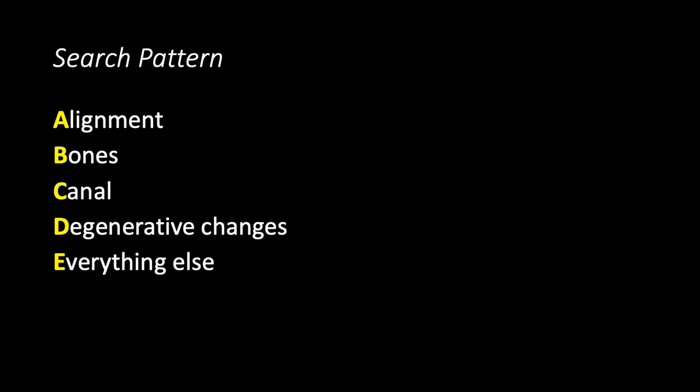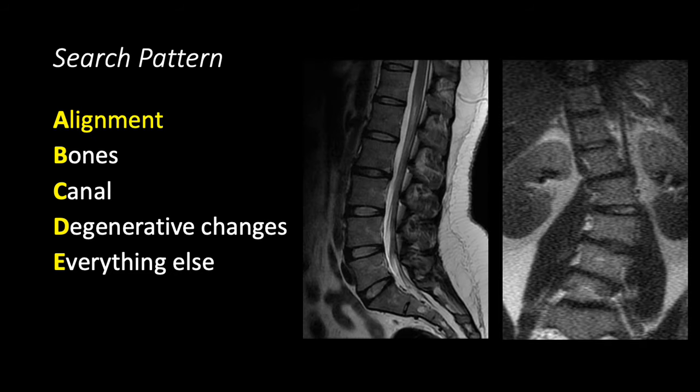If you're interpreting imaging, it's important to have a search pattern to make sure you don't overlook anything. I use the ABCDE approach. A is for alignment and can be assessed in multiple planes. On the sagittal plane, you can assess the degree of lordosis or kyphosis, and you can also evaluate for any listhesis — that is, displacement of one vertebral body anteriorly or posteriorly with respect to another. If you have a coronal sequence, you can assess for scoliosis as well.